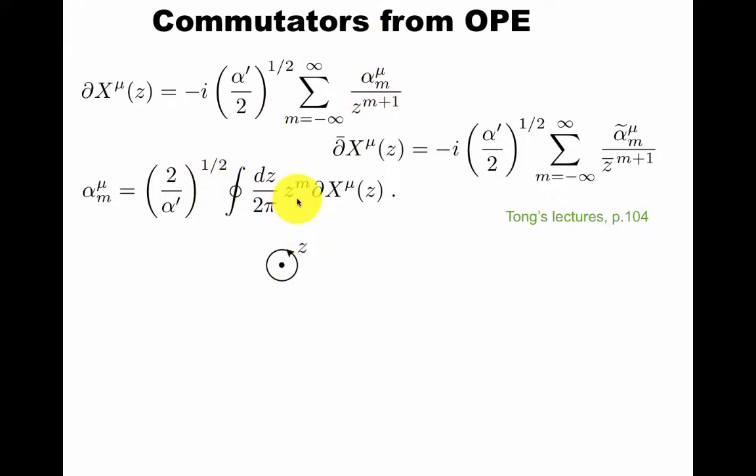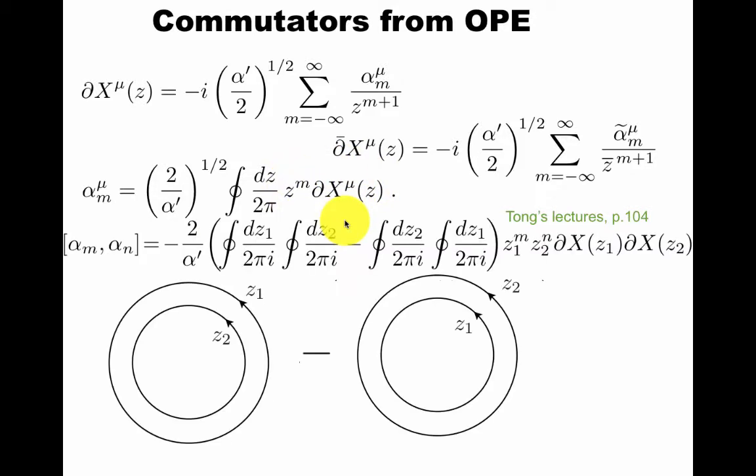But this immediately leads us to a trick. To extract the commutator, if you have these kind of products, you can write a commutator of integrals, where this means that the order of these integrations is shifted. First you do z2, then z1, and you do z1 and z2. Why does this matter? We'll see in a moment how this relates to operator ordering in quantum mechanics. Here, we're picturing this in the functional integral.